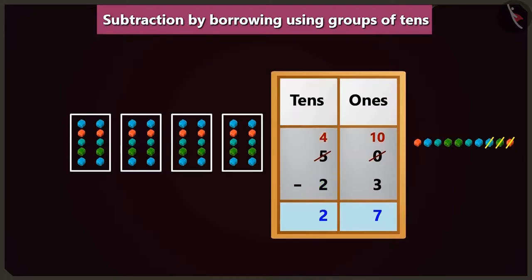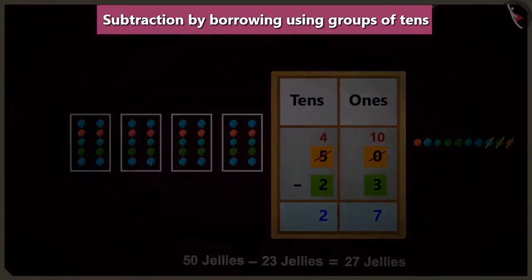Yes. So, this way, if we subtract twenty-three jellies from fifty jellies, then you will be left with only twenty-seven jellies.